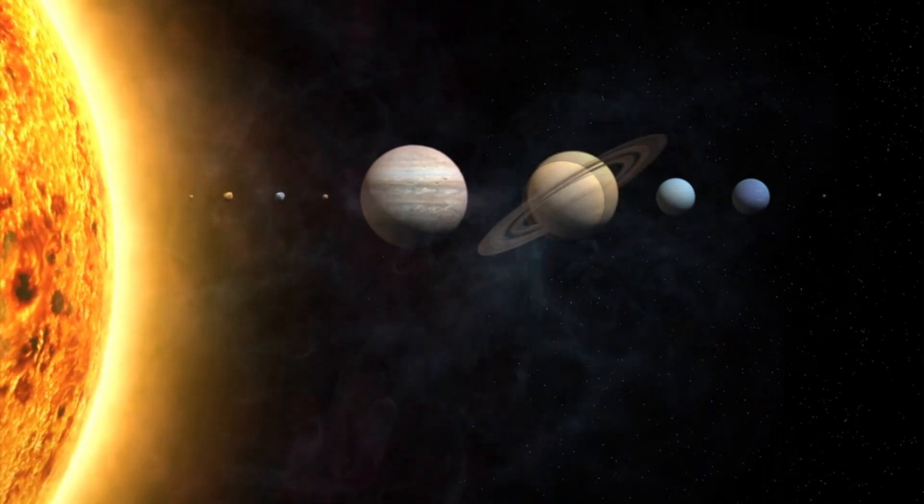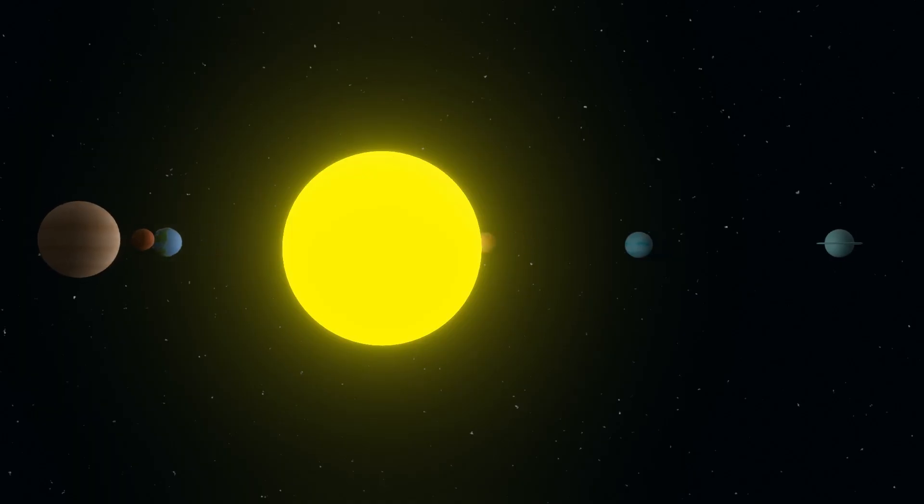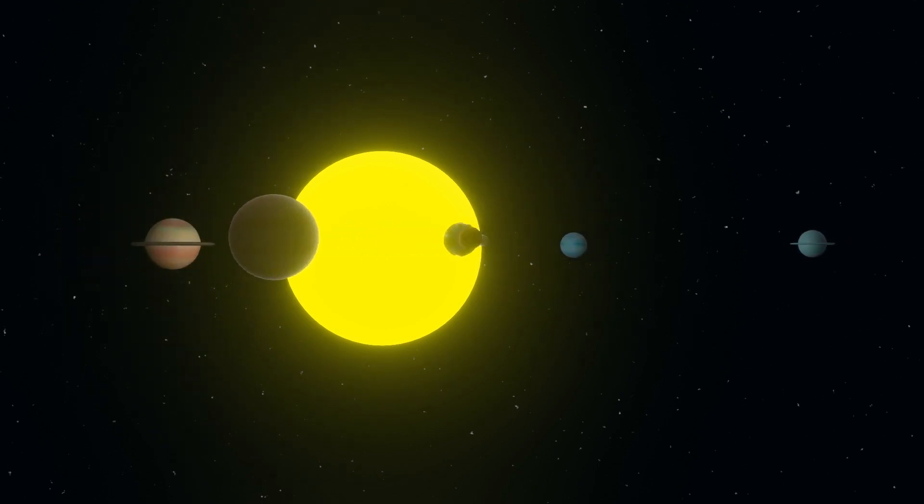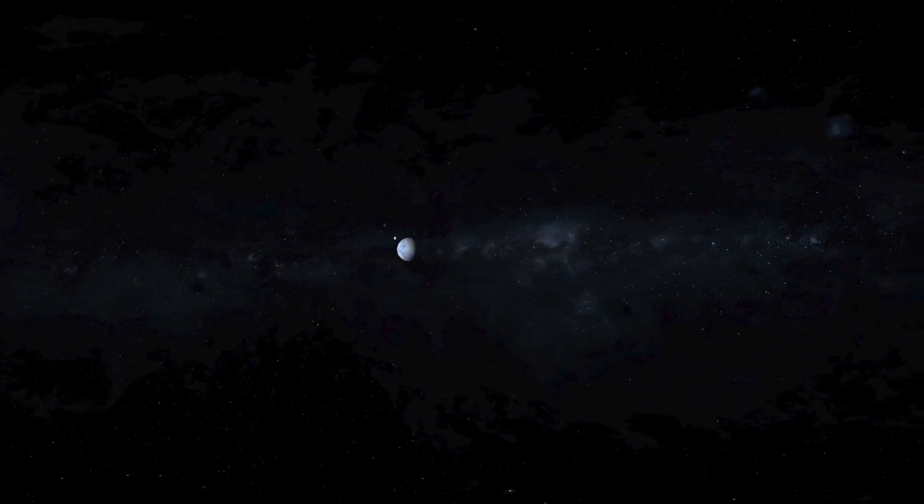From the sun, we continue outward. Past the orbit of Mars, through the asteroid belt, beyond gas giants like Jupiter and Saturn. And then further, to the edge of our solar system.